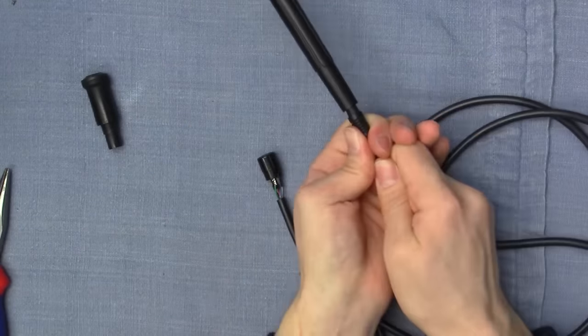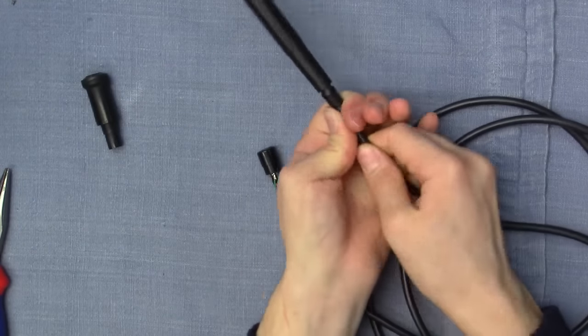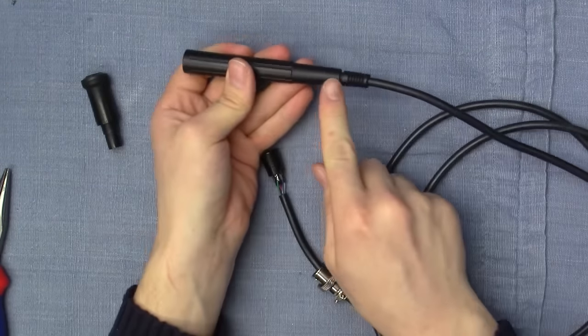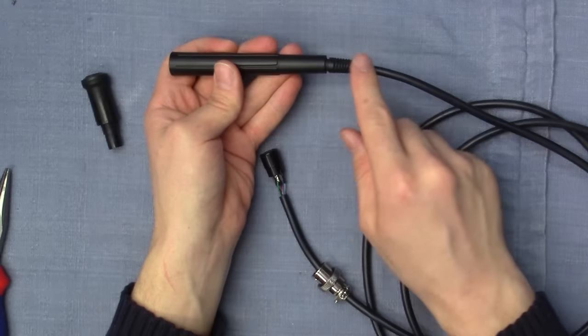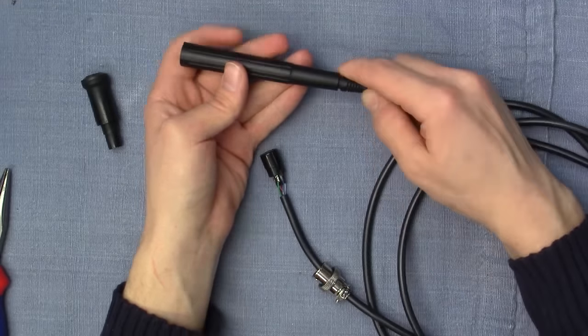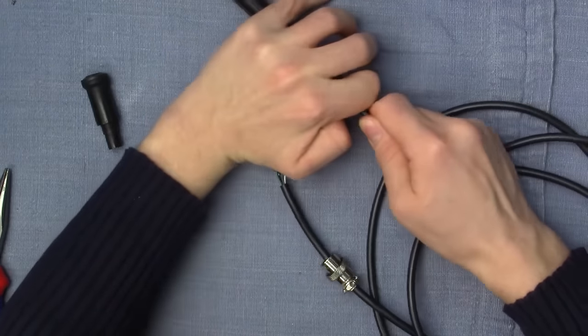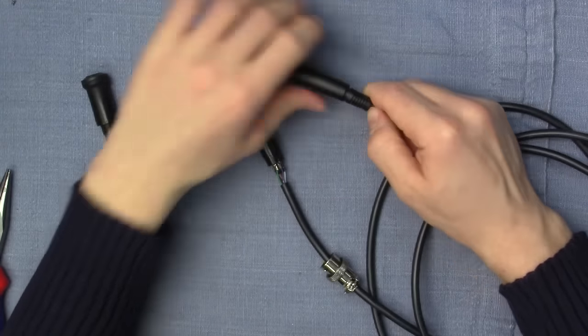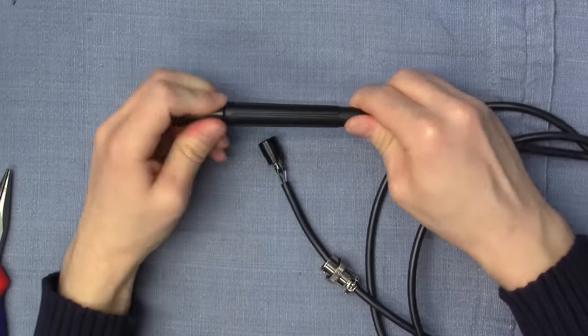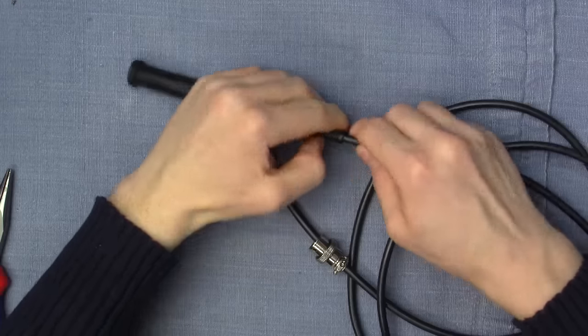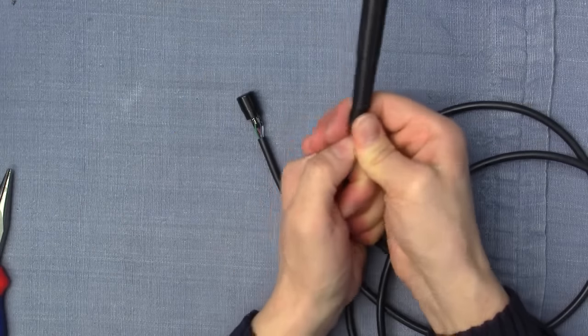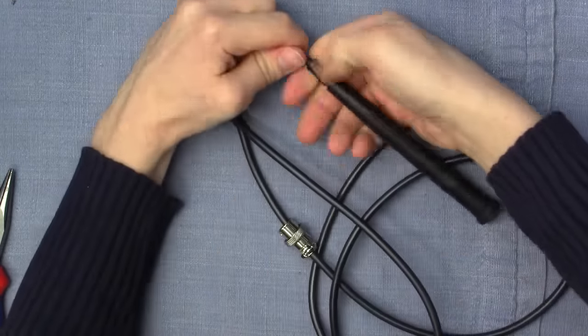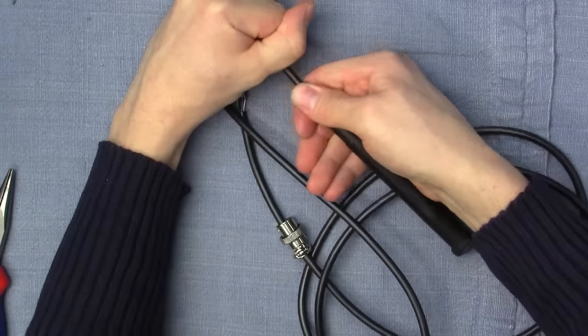Now this just squeezes in there. The handle seems to be just ever so slightly thinner than the strain relief, so when you actually force the strain relief in there, it puts some pressure on the cable. And getting this strain relief all the way on has been a bit of a bother every time I've had this apart.